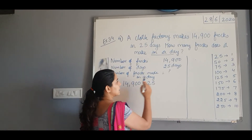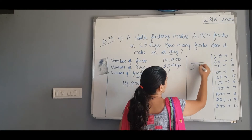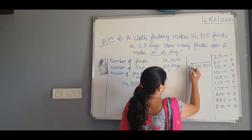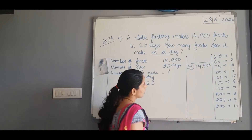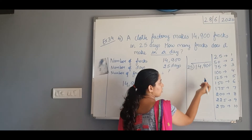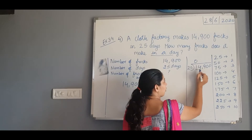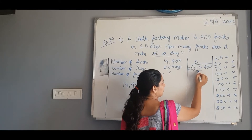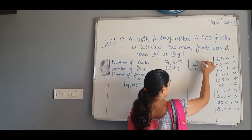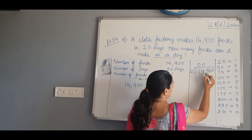Now we will divide the dividend by the divisor: 14,900 divided by 25. This is the dividend and 25 is the divisor. Since 1 is less than 25 we cannot divide, so we put 0. Taking the next digit we get 14 — 14 is less than 25 so we cannot divide, we put 0 again. Now we take the third digit: 149.